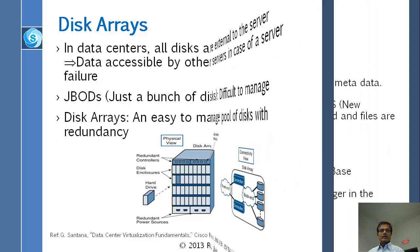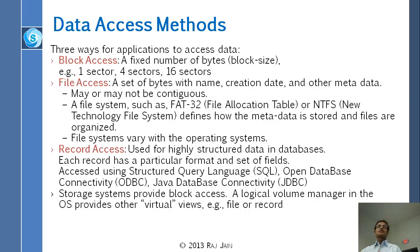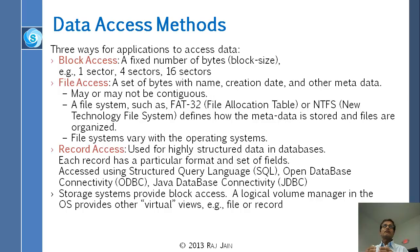There are three ways we access these disks. The first is block access, where we tell the disk to read a specific sector number. Block size is defined by number of sectors; each sector is generally 512 bytes. You might read 4, 16, or 64 sectors — generally powers of two — and you go block by block. This is the most common method.